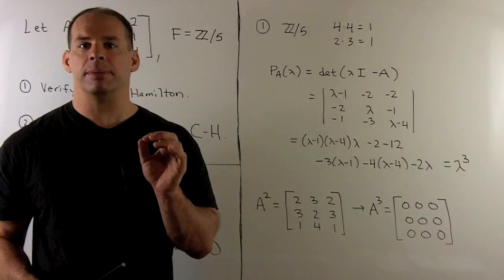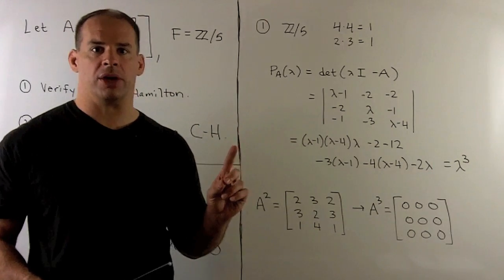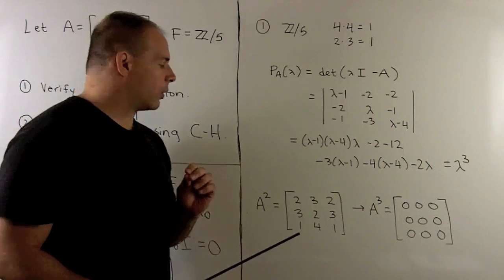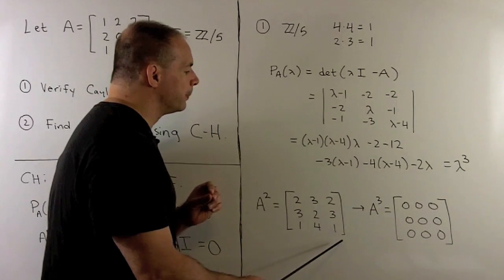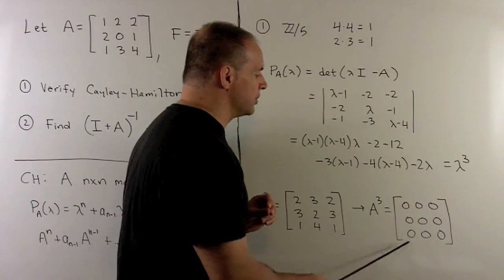To verify Cayley-Hamilton, I want to show that A cubed equals the zero matrix. I work out A squared, and then when we work out A cubed, we get zero.